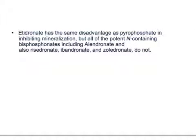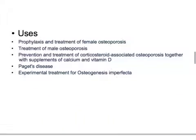Hypocalcemia should therefore be corrected before starting therapy. Etidronate has the same disadvantage as pyrophosphate in inhibiting mineralization, but all the potent nitrogen-containing bisphosphonates — including alendronate, risedronate, ibandronate, and zoledronate — do not.